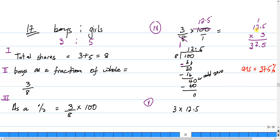One place of decimal, so we come in one place from the right. Our answer would be 37.5 percent. So in this case, the boys would be equal to 37.5 percent of the total number of students in the class.